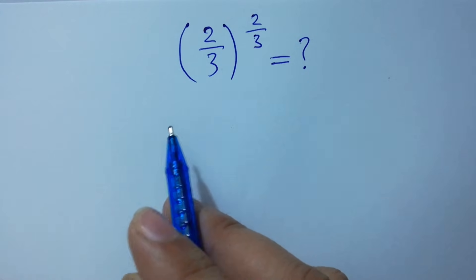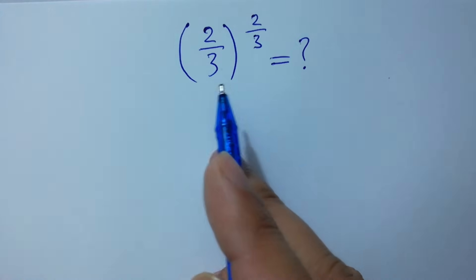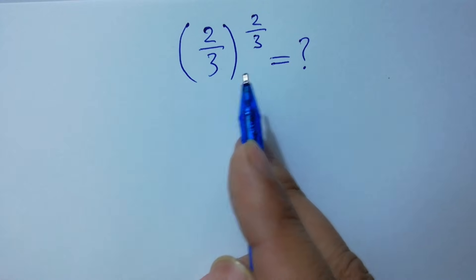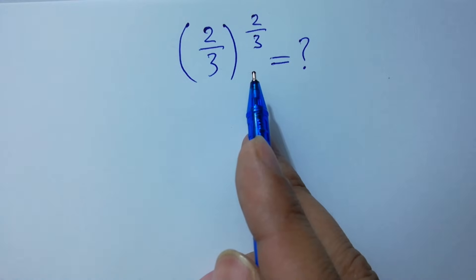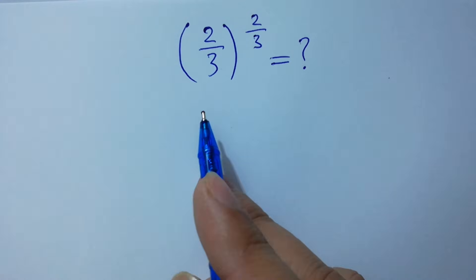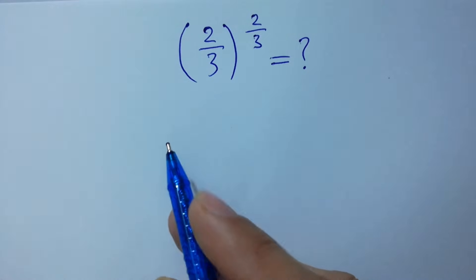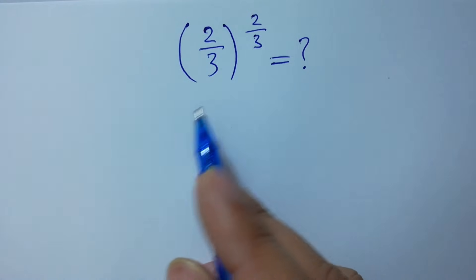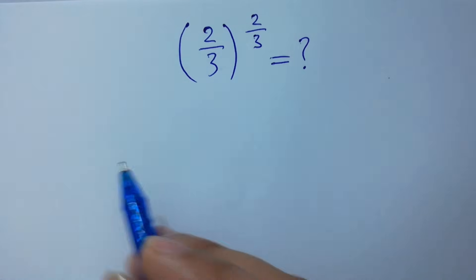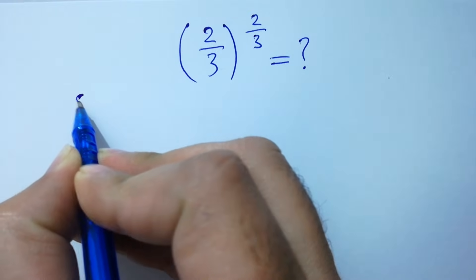Hello friends, what is equal to 2 over 3 to the power 2 over 3? This is a power question. Can you simplify this? Let's have a solution.